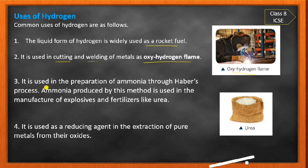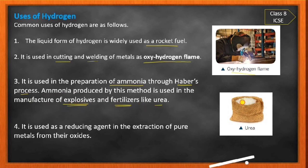Third, hydrogen is used in the preparation of ammonia by Haber's process. The ammonia produced is then used in the manufacturing of explosives and fertilizers like urea.